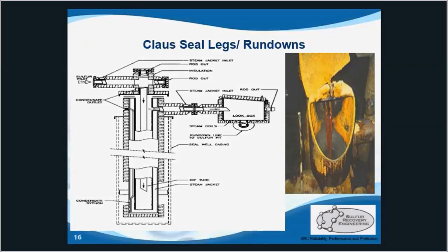To do this, the seal legs must be deep enough to ensure that the column head pressure of the liquid sulfur is greater than the maximum combustion air blower discharge pressure. And these seal legs and rundowns must be steam jacketed, or they will plug up.